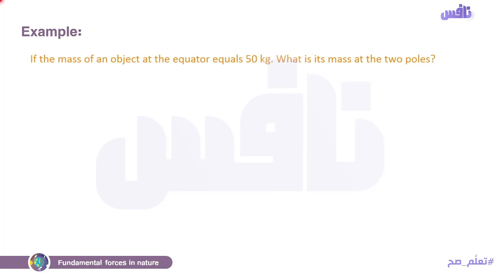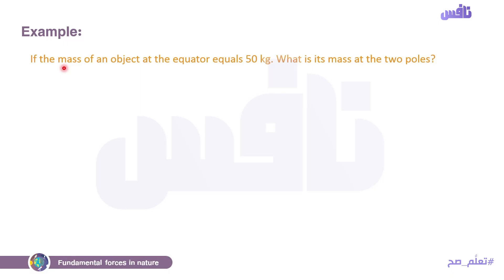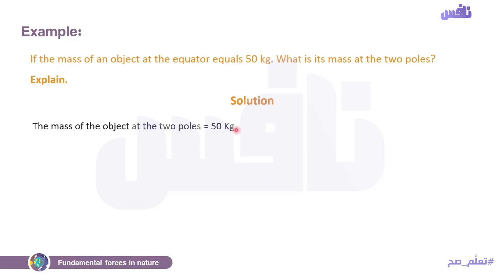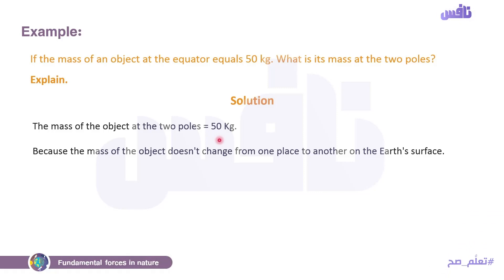Example: If the mass of an object at the equator equals 50 kg, what is its mass at the two poles? واحد متسرع يقول at two poles الweight increases والacceleration increases. لا — السؤال بيسأل على الماس مش الويت. هل الmaس بتتغير؟ لا. The mass of the object at the two poles equals 50 kg, because the mass of an object doesn't change from one place to another on the earth's surface. اللي بيتغير هو الweight لأن الweight بيعتمد على gravity of the earth.